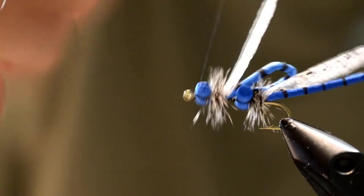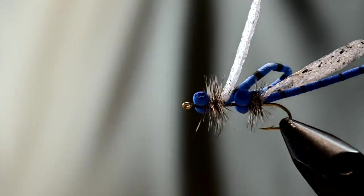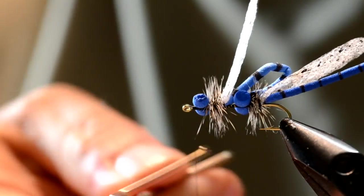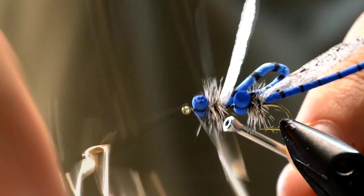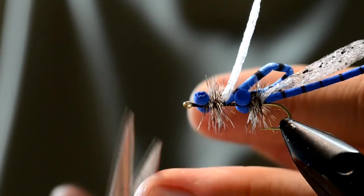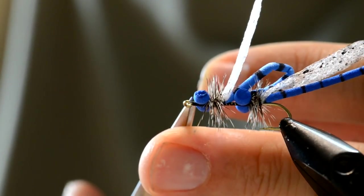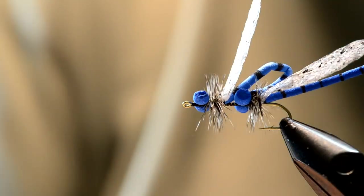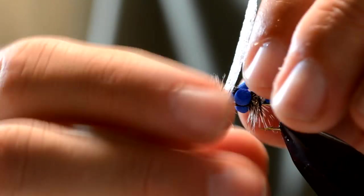Bring it around to the front, whip finish and we'll be done. Nice thing about this one is it will take fish on top, but it's also a very good dry if you're going to drop a damsel nymph from it.